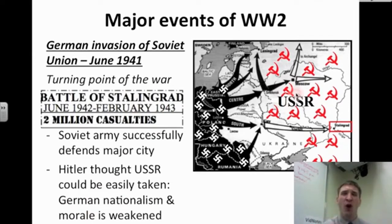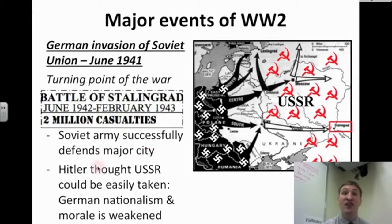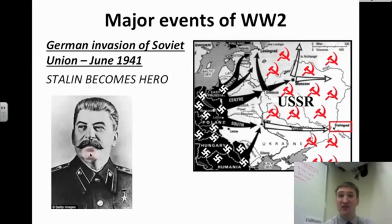The turning point of the war happens in the Soviet Union, in a city called Stalingrad, named after Soviet leader Joseph Stalin. The fighting lasts months, from June 1942 to February 1943, and it's bloody — two million soldiers experience casualties. The Soviet Army successfully defends Stalingrad. Hitler thought the USSR could be easily taken, but he was delusional. German nationalism and morale are severely weakened by this defeat, and the German soldiers don't really recover. After the Battle of Stalingrad, Joseph Stalin becomes a hero.